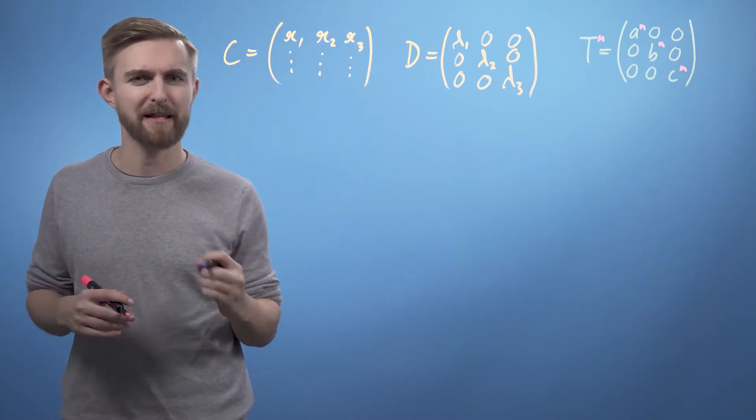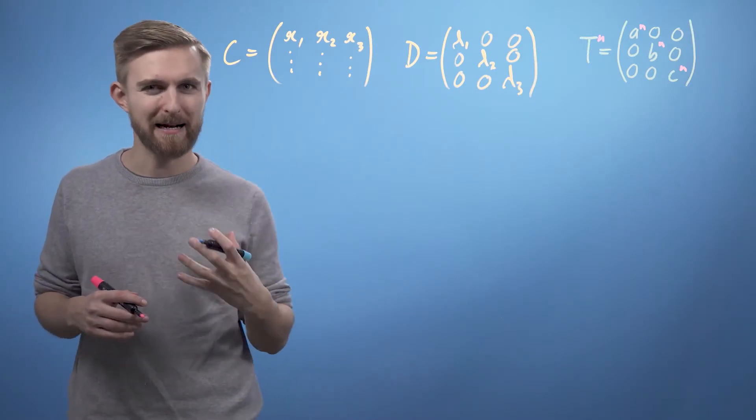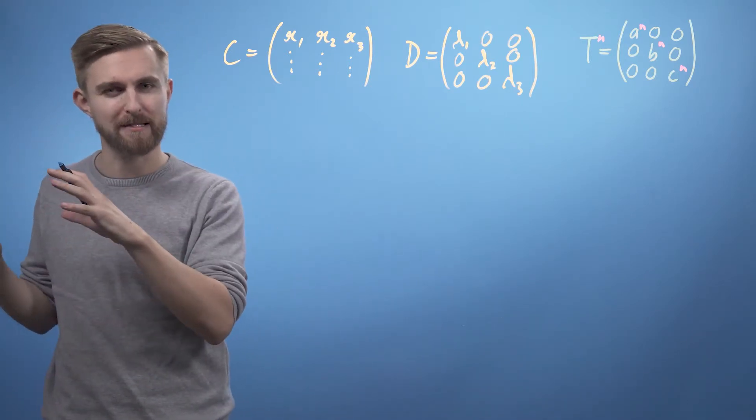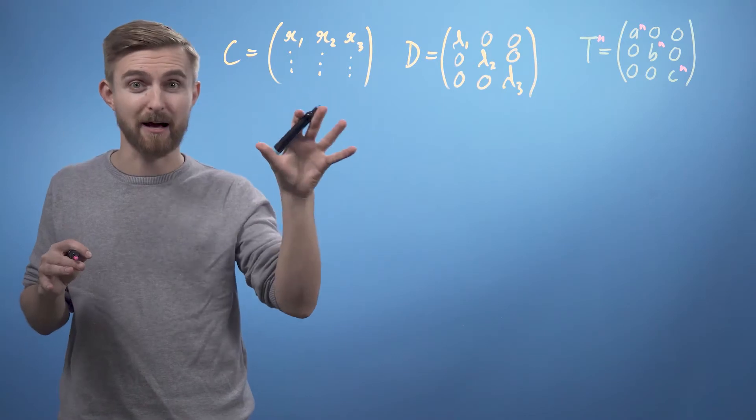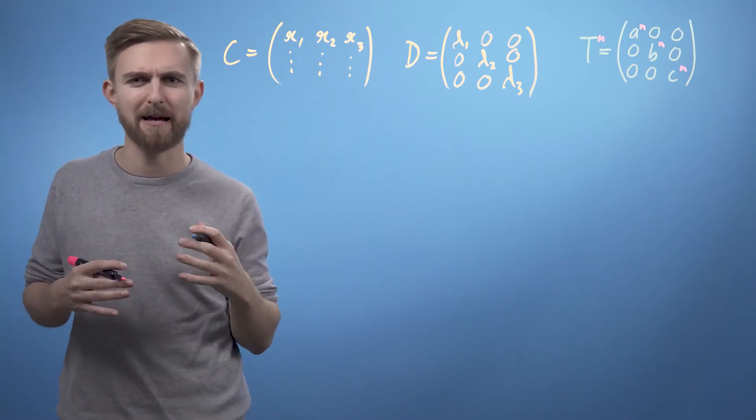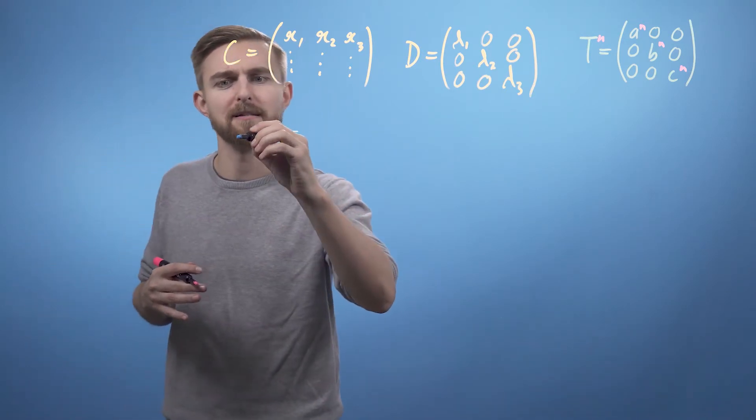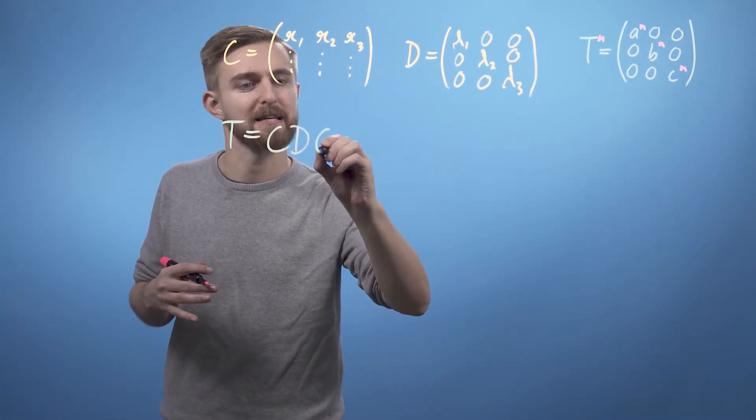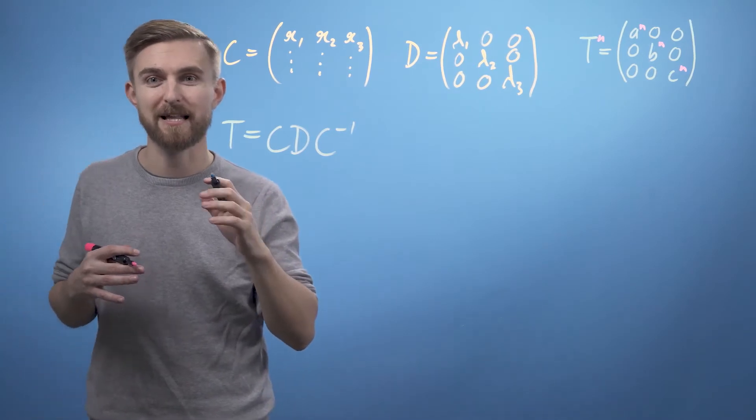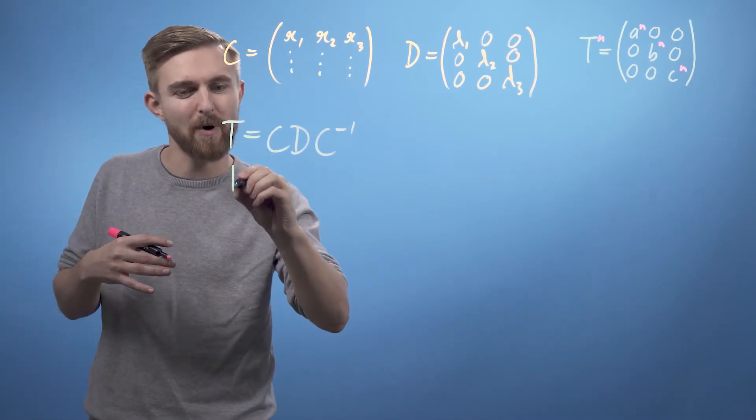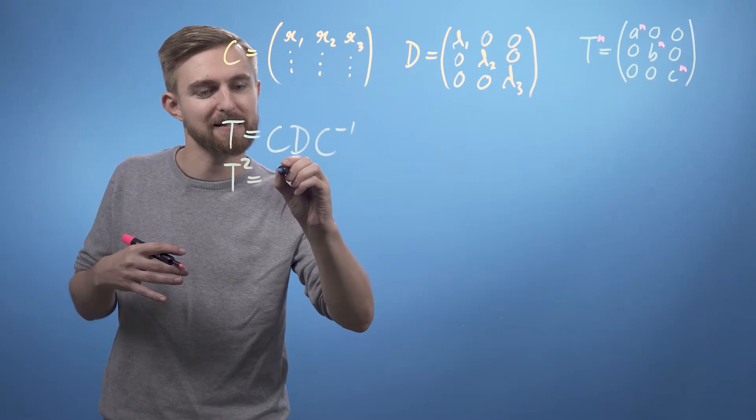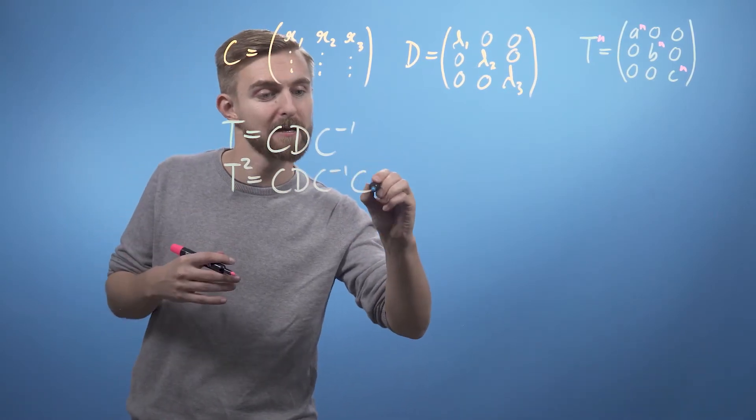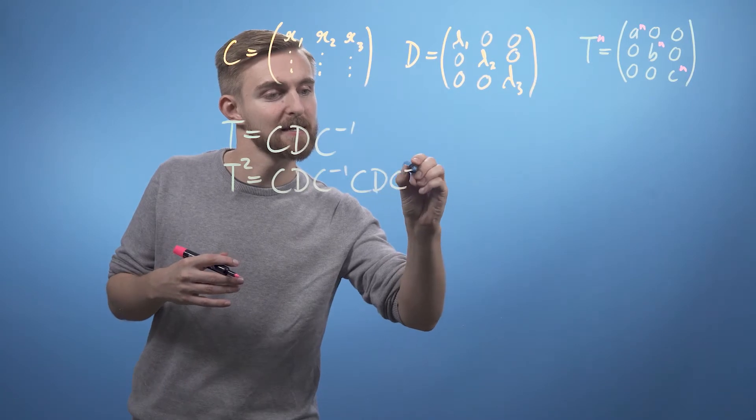Bringing together everything we've just said, it should now be clear that applying the transformation T is just the same as converting to our eigenbasis, applying the diagonalized matrix, and then converting back again. So T equals C D C inverse, which suggests that T squared can be written as C D C inverse multiplied again by C D C inverse.